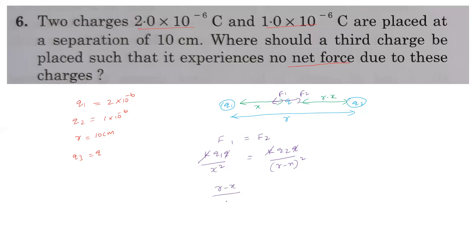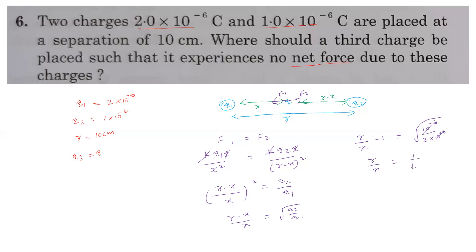Rearranging: (r−x)/x = √(q2/q1). Substituting q2 = 1×10⁻⁶ and q1 = 2×10⁻⁶, we get r/x − 1 = √(1/2) = 1/√2. Therefore r/x = 1/√2 + 1.